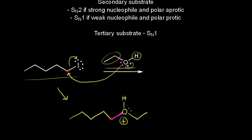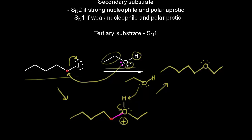Next, we need to make a neutral molecule for our product, so we need to have another molecule of ethanol come along — ethanol is our solvent. This time, the ethanol molecule is going to function as a base. We take this proton, and these electrons are left behind on the oxygen. Our second step is an acid-base reaction, and we get our final product, which is an ether.